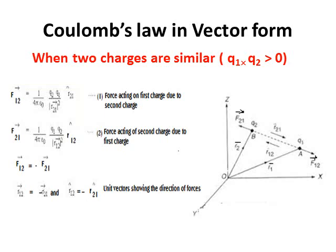As the charges are of the same kind—that means either both are positive or both are negative—therefore the product of q1 and q2 will be greater than zero and they will repel each other.